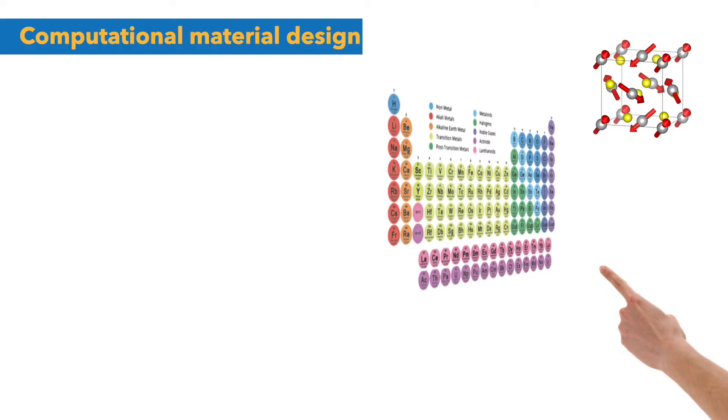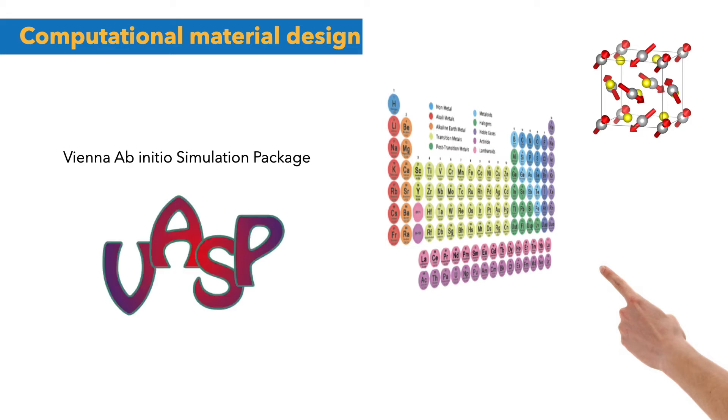There are computational methods to predict what materials will be like before even trying to synthesize them in the laboratory. They are called ab initio techniques and are available as software packages while still being heavily developed in the scientific community. The package we used is the very powerful Vienna Ab Initio Simulation Package, or VASP for short.